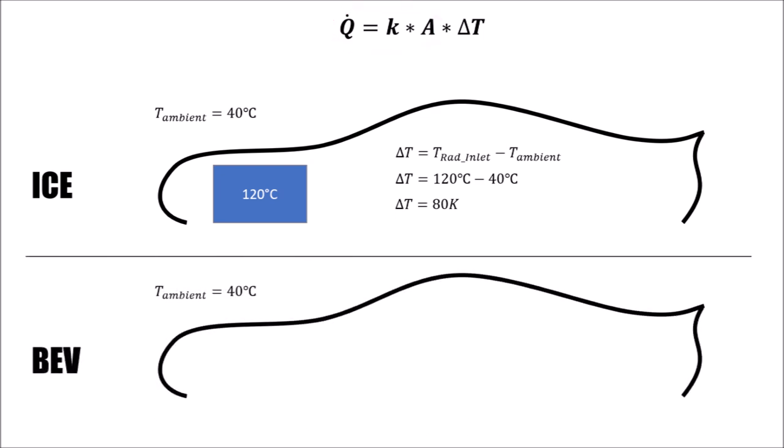If we then take the same radiator and look at an electric car, its water cycle can, depending on the manufacturer, run at up to 80 degrees. So for an ambient temperature of 40 degrees, this gives us a delta T of only 40 Kelvin.